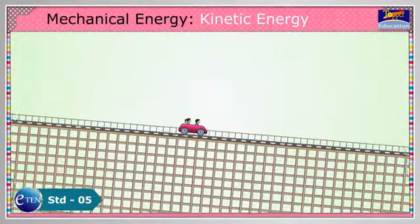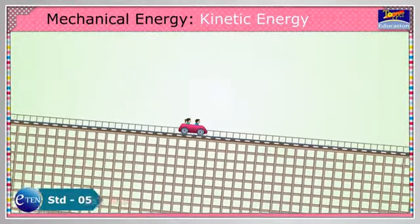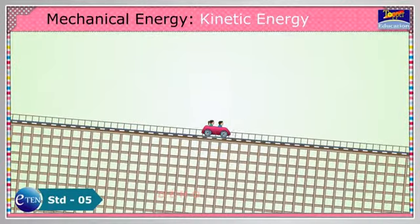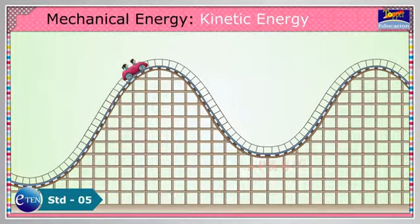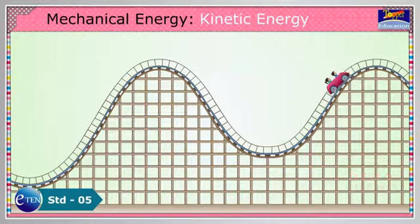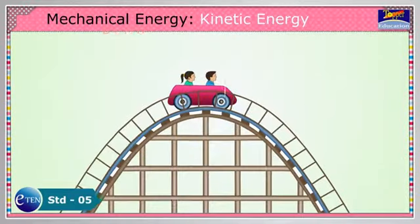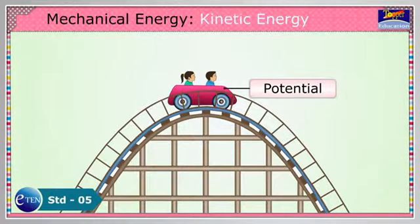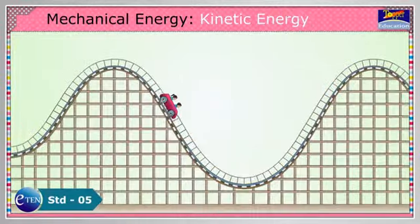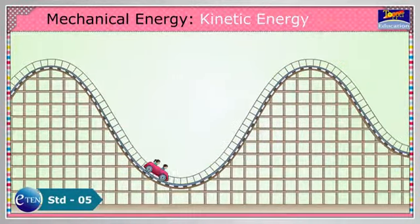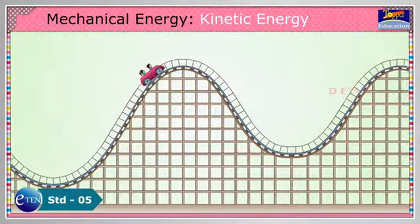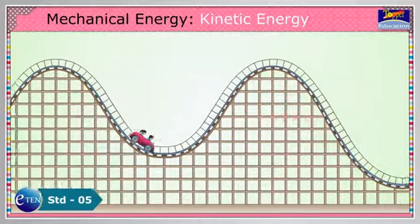A good example is a roller coaster. When it is on its way up, it is using kinetic energy since the energy is in motion. When it reaches the top, it has potential or stored energy. When it goes down the hill, it is using kinetic energy again.